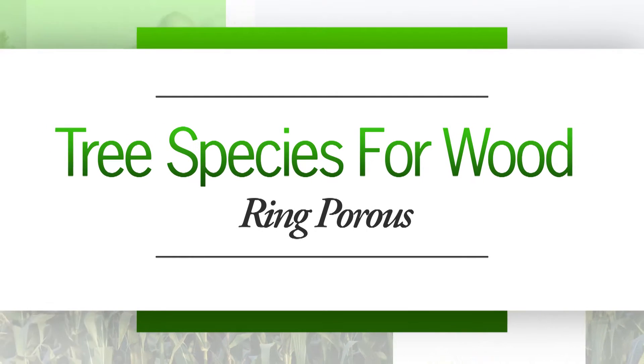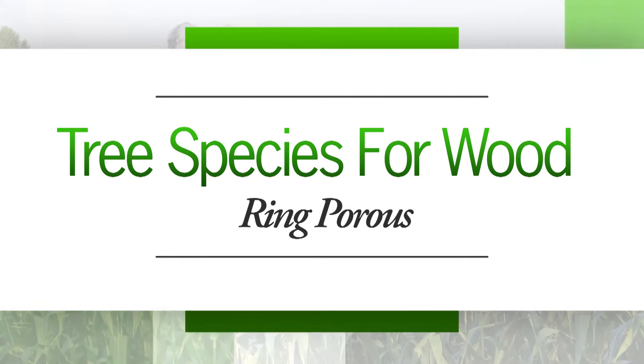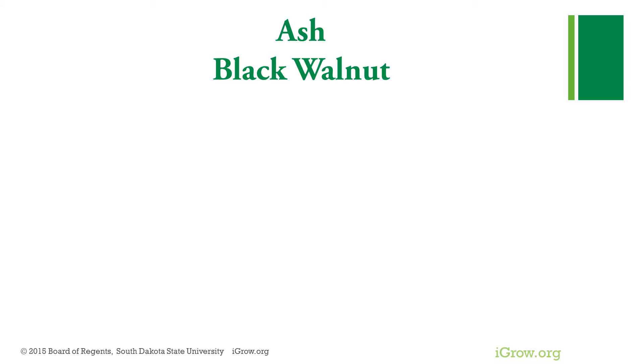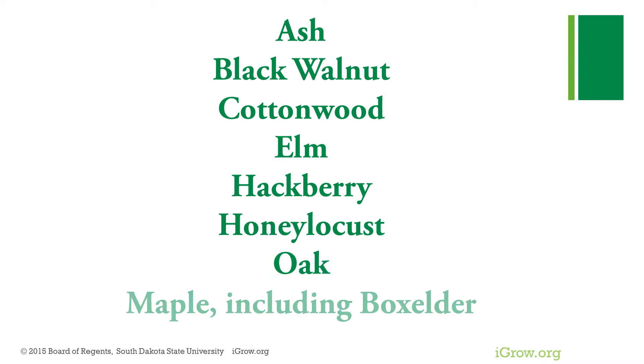Identifying wood is a critical skill for woodworking since species have different properties and uses. The most common broadleaf tree species used for wood products in South Dakota are ash, black walnut, cottonwood, elm, hackberry, honey locust, oak, maple, including box elder. The wood of these species can be identified by differences in some key characteristics.